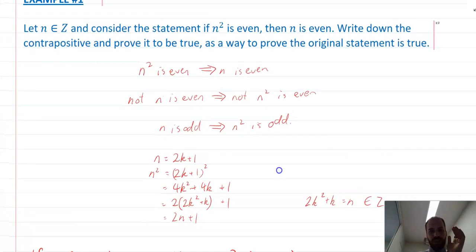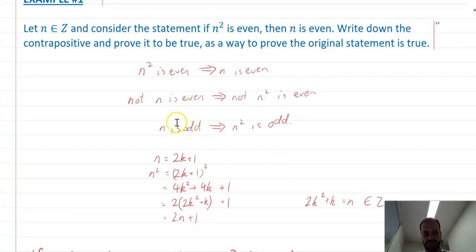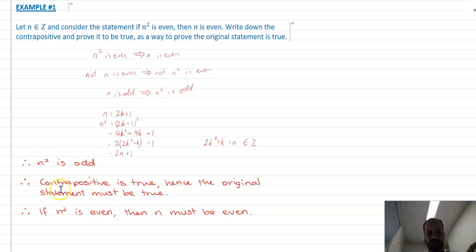So, recapping: because I've proven the contrapositive, because I've proven this, then I've also proven the original statement. That's the basic idea. Prove the contrapositive, you've proven the original statement.